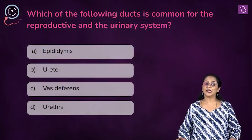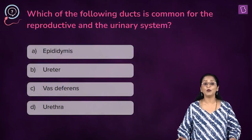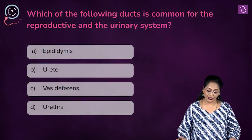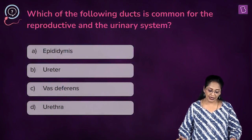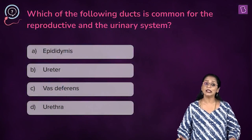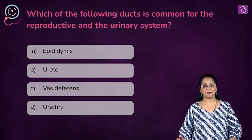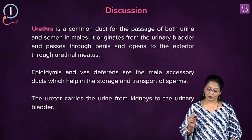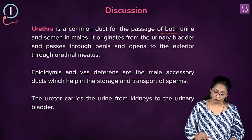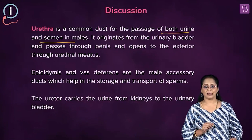A new question: which of the following ducts is common for the reproductive and the urinary system? A. the epididymis, B. ureter, C. vas deferens, or D. the urethra. The urethra is the common duct or passage for both urine and semen in males.